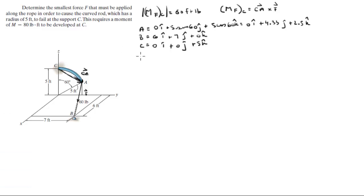So the first thing to do is to find vector CA. Vector CA is vector A minus vector C, and it comes out to be 0 in the i plus 4.33 in the j minus 2.5 in the k.